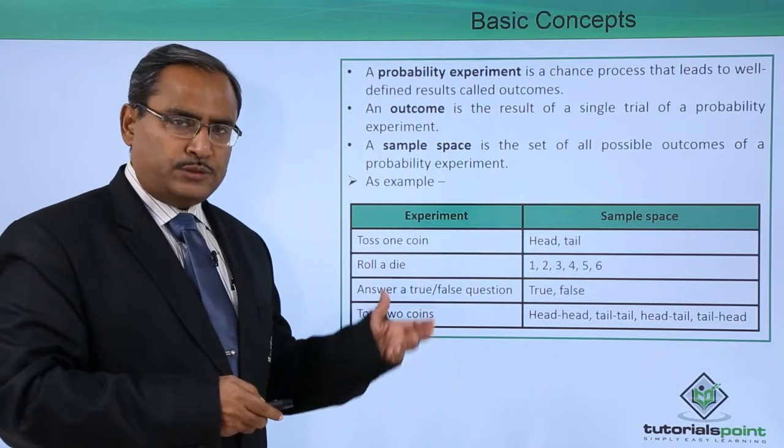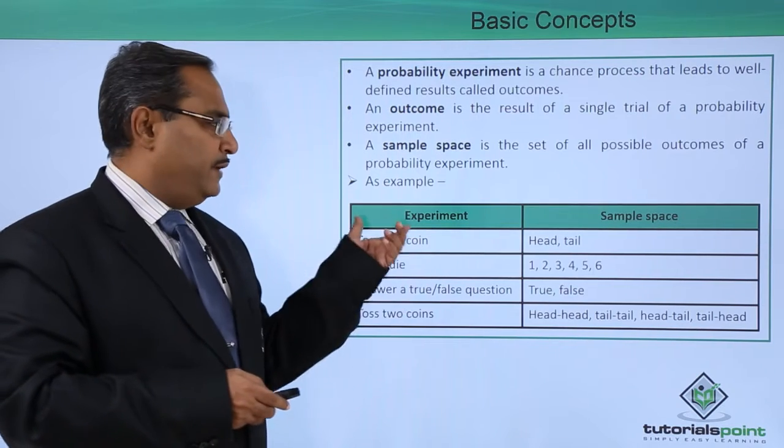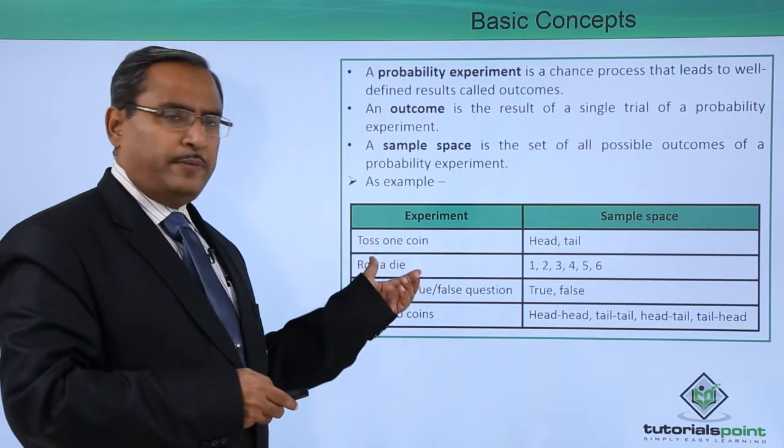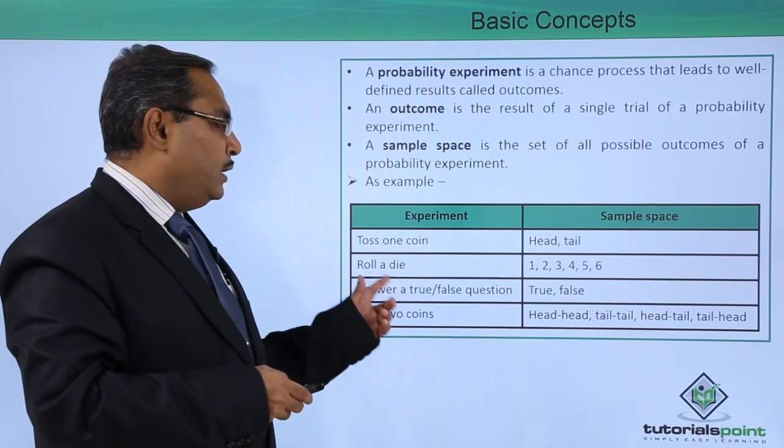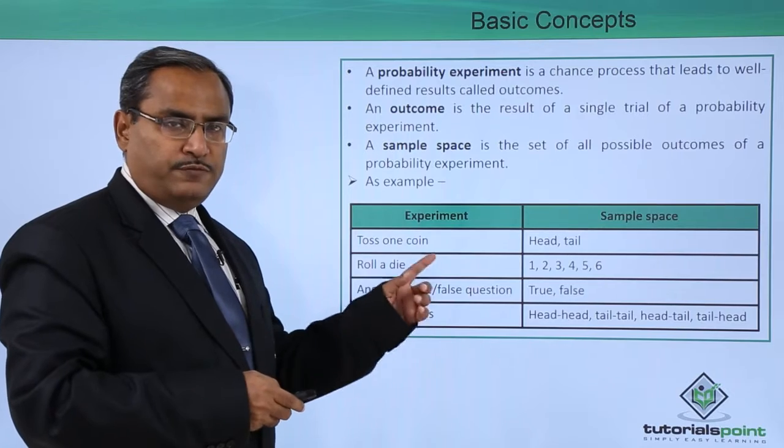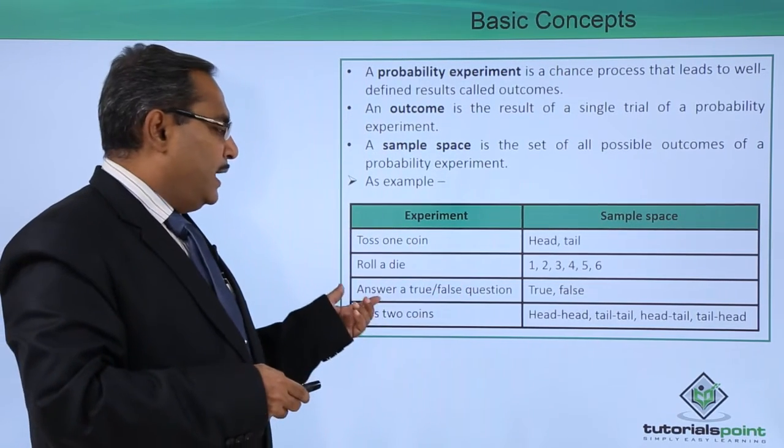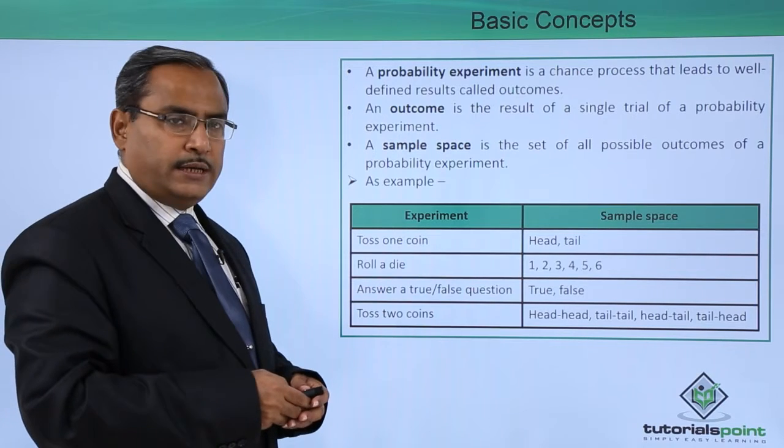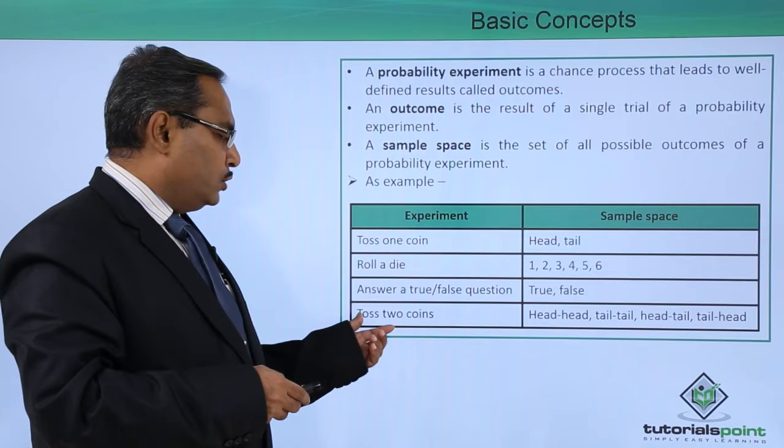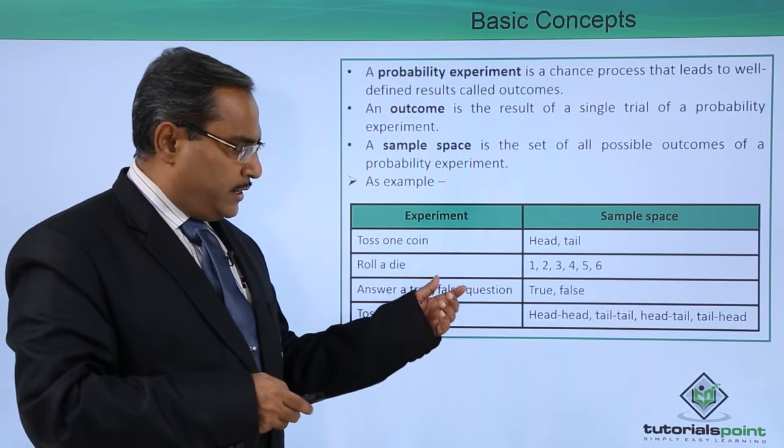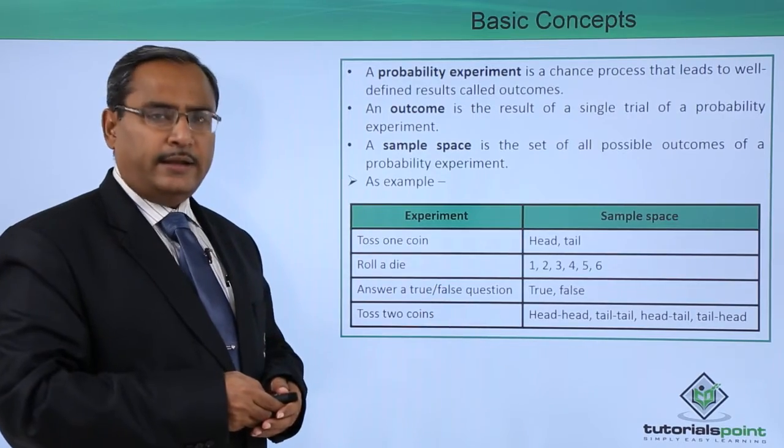Let us show you some examples. Toss one coin: if it is the respective experiment, then the sample space will be head and tail. Roll a die: 1, 2, 3, 4, 5, 6 is the sample space. Answer a true or false question: here the sample space is true or false. Toss two coins: here the sample space is head-head, tail-tail, head-tail, and tail-head.